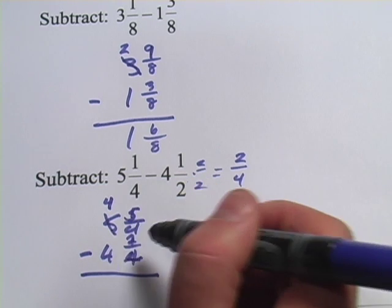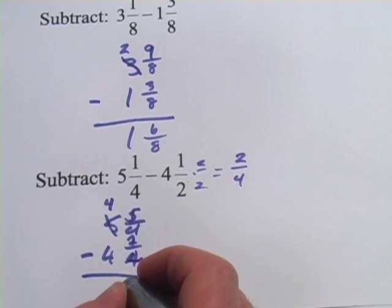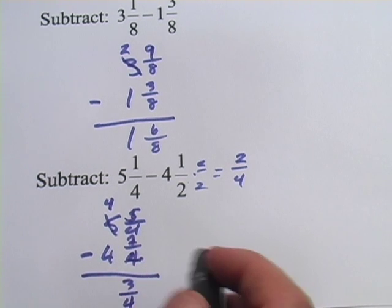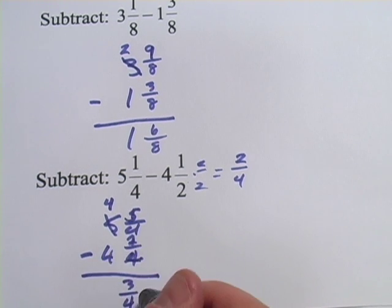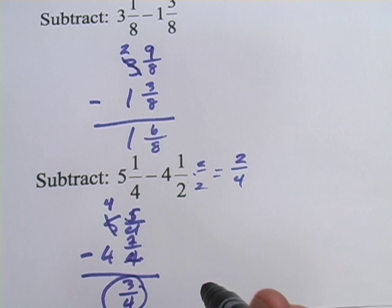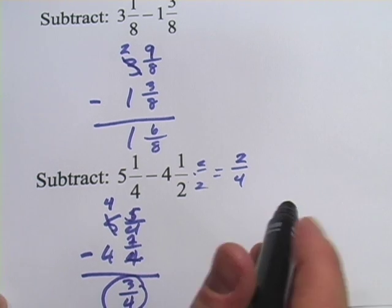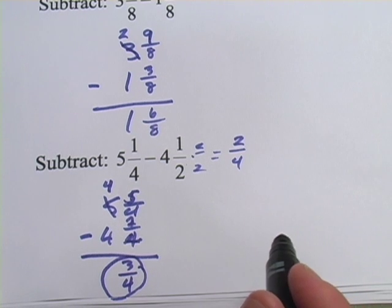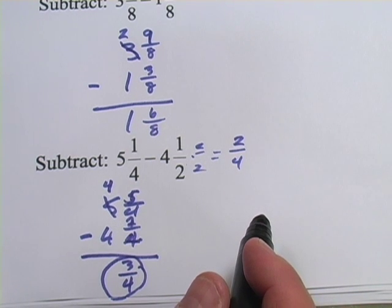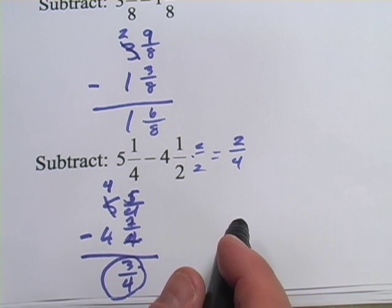And five-fourths minus two-fourths is three-fourths. Five minus two is three. And then we have four minus four, which is zero. So that's our answer. Five and a quarter minus four and a half is just three-fourths. So that is working on subtraction with mixed numbers and regrouping.